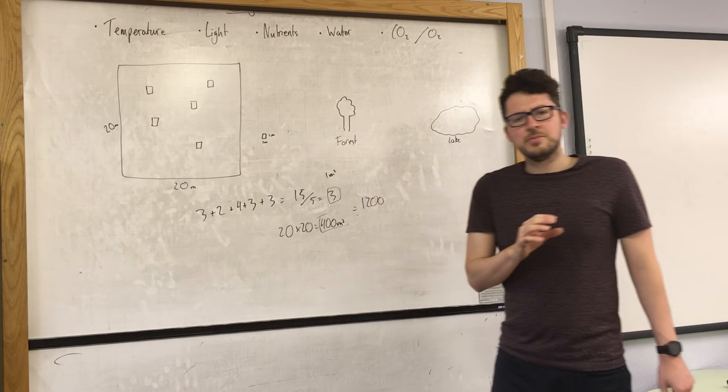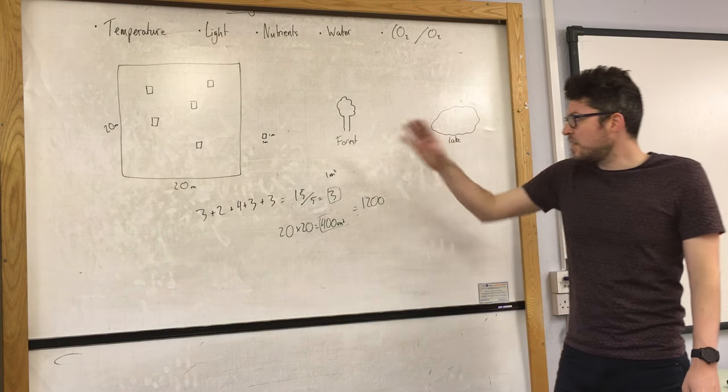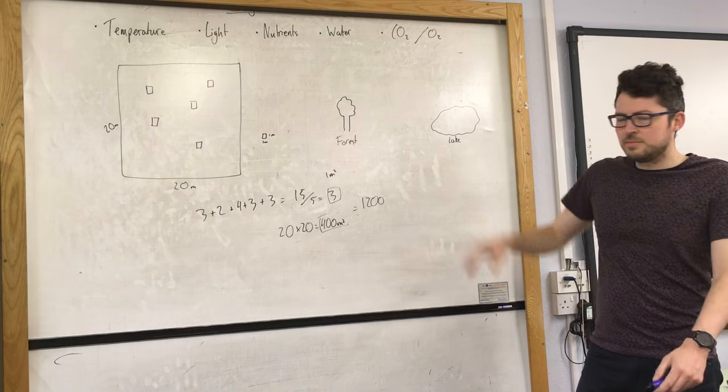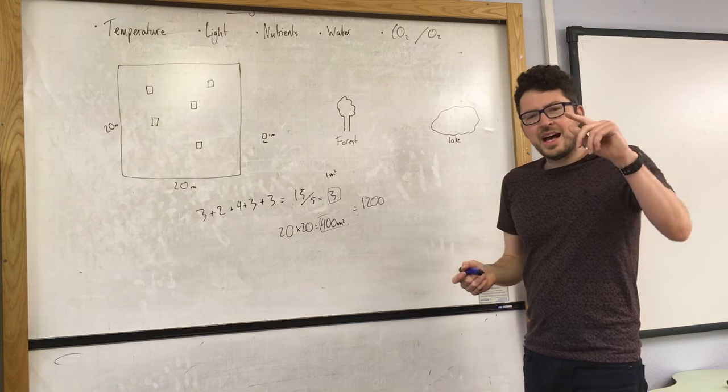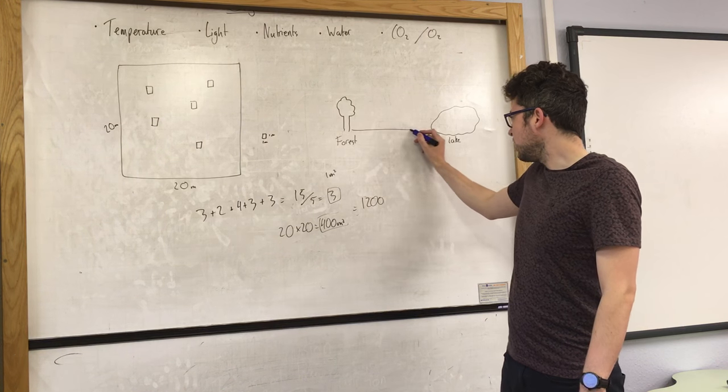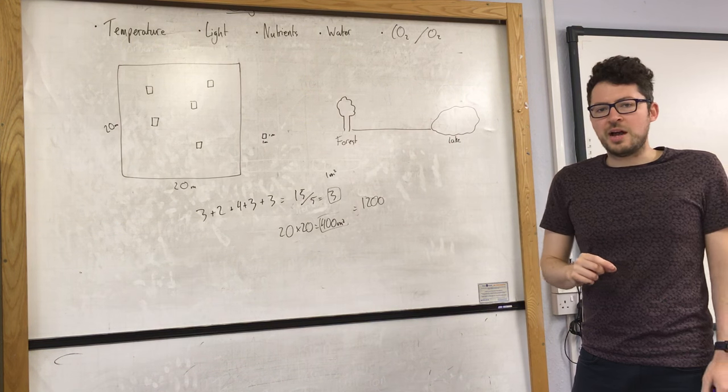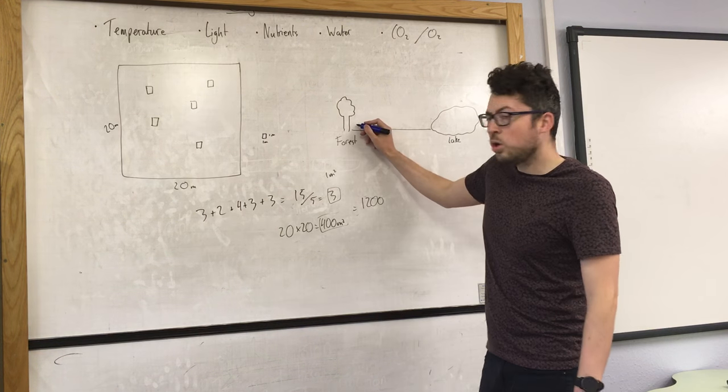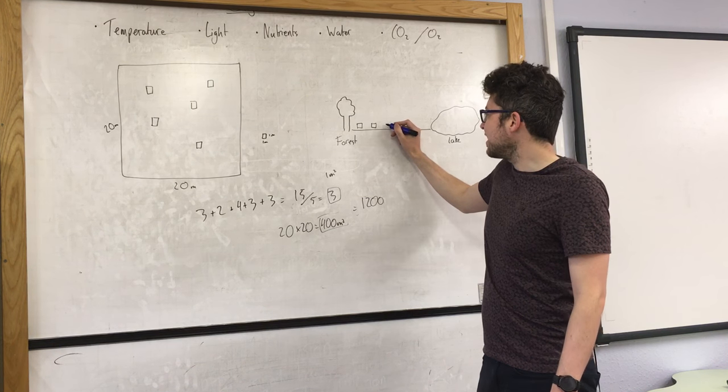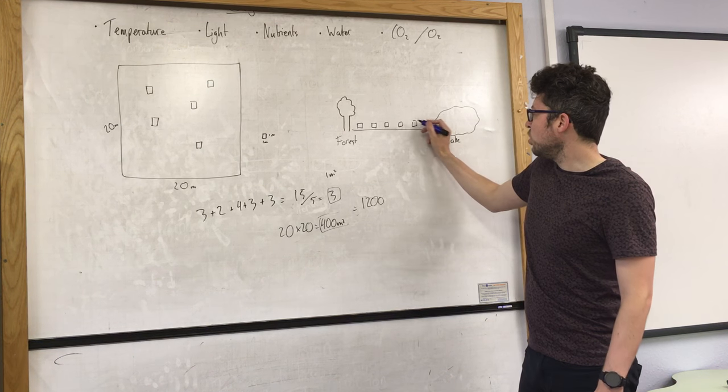Now the other way we need to be able to work out how to sample is between two different areas. So here I've got a forest and a lake, obviously very simply drawn. And I want to know how the distribution of plants changes between those areas. Now what I would do is I would lay down a tape measure between those two areas. And then I'd place a quadrat at regular intervals and count the number of organisms in those quadrats.